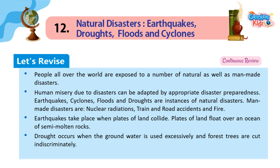Let's revise: People all over the world are exposed to a number of natural as well as manmade disasters. Human misery due to disasters can be reduced by appropriate disaster preparedness. Earthquakes, cyclones, floods and droughts are instances of natural disasters. Manmade disasters include nuclear radiation, train and road accidents, and fire. Earthquakes take place when plates of land collide, as those plates float over an ocean of semi-molten rocks. Drought occurs when groundwater is used excessively and forest trees are cut indiscriminately.